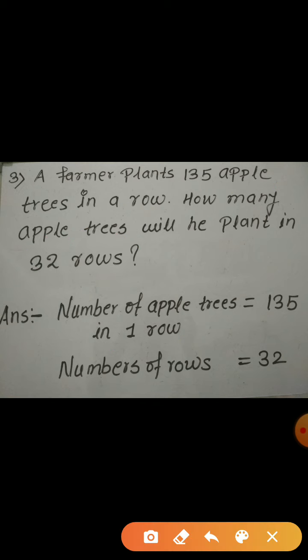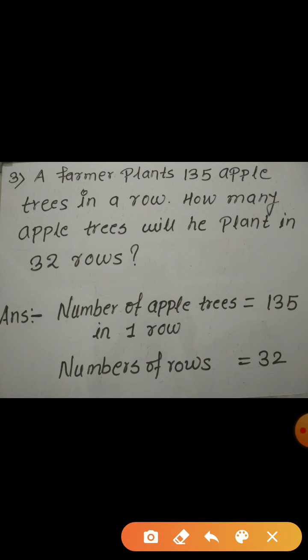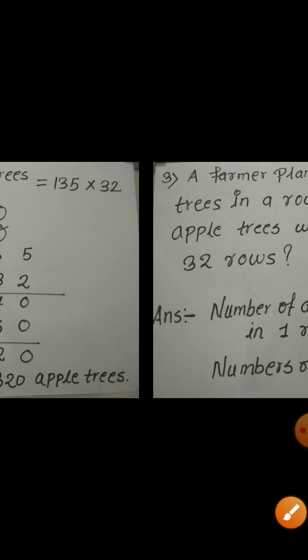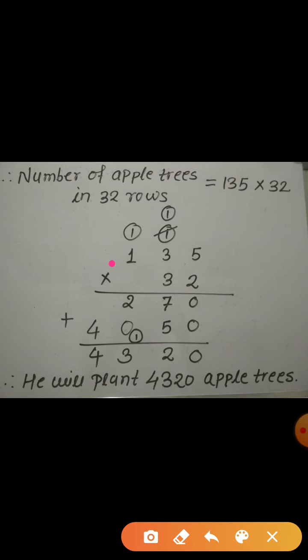The number of apple trees in one row is 135 and the total number of rows is 32. To find how many apple trees he will plant in 32 rows, we need to multiply the number of apple trees in one row by the number of rows. So I am going to multiply 135 by 32.